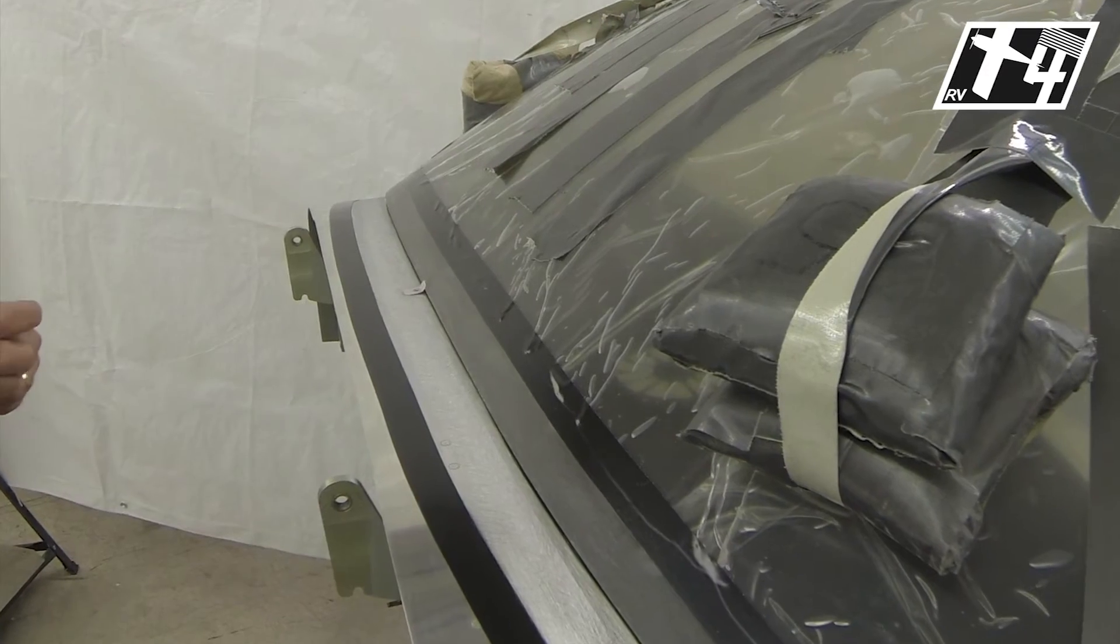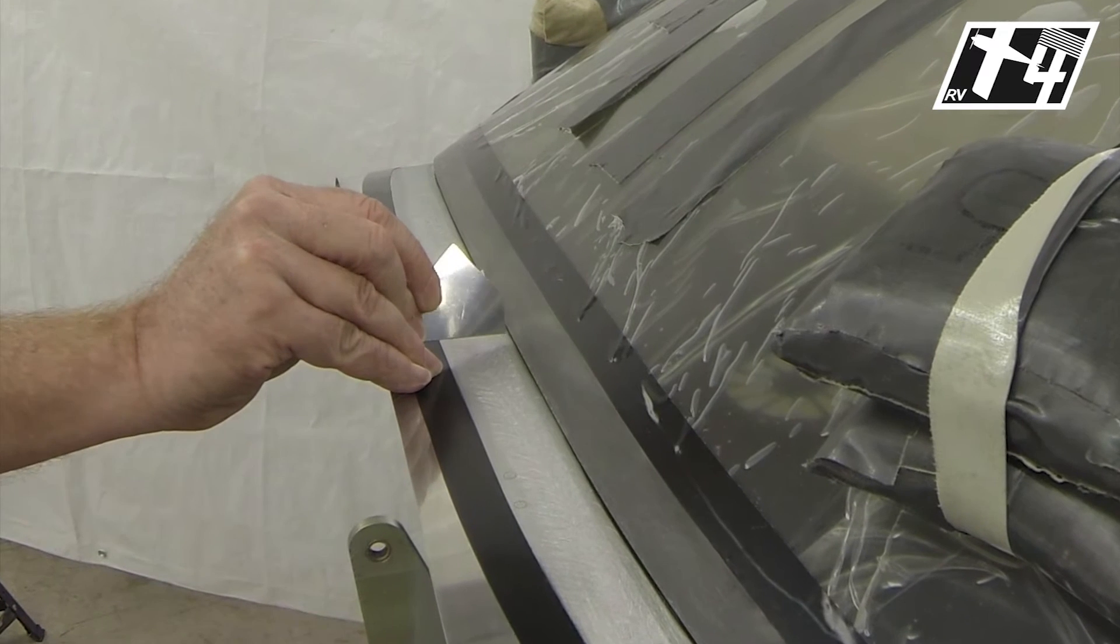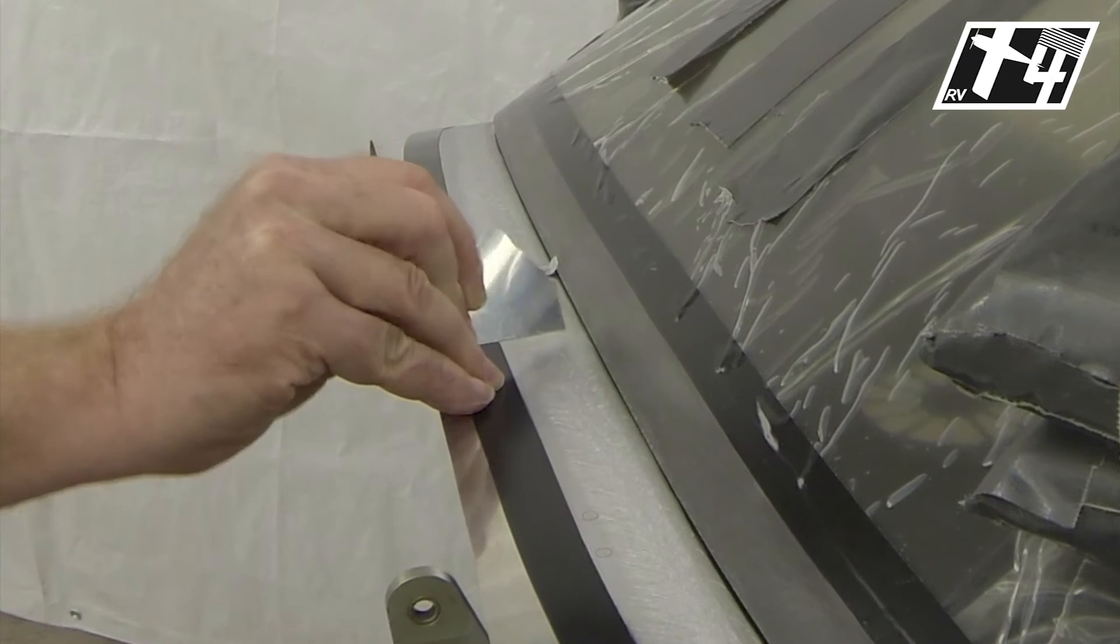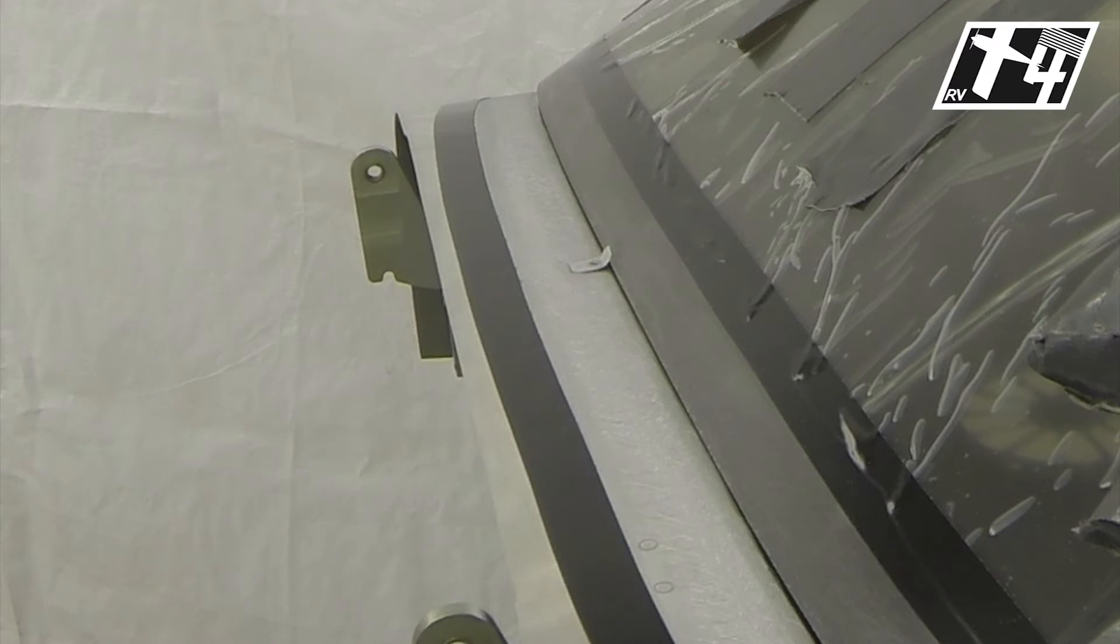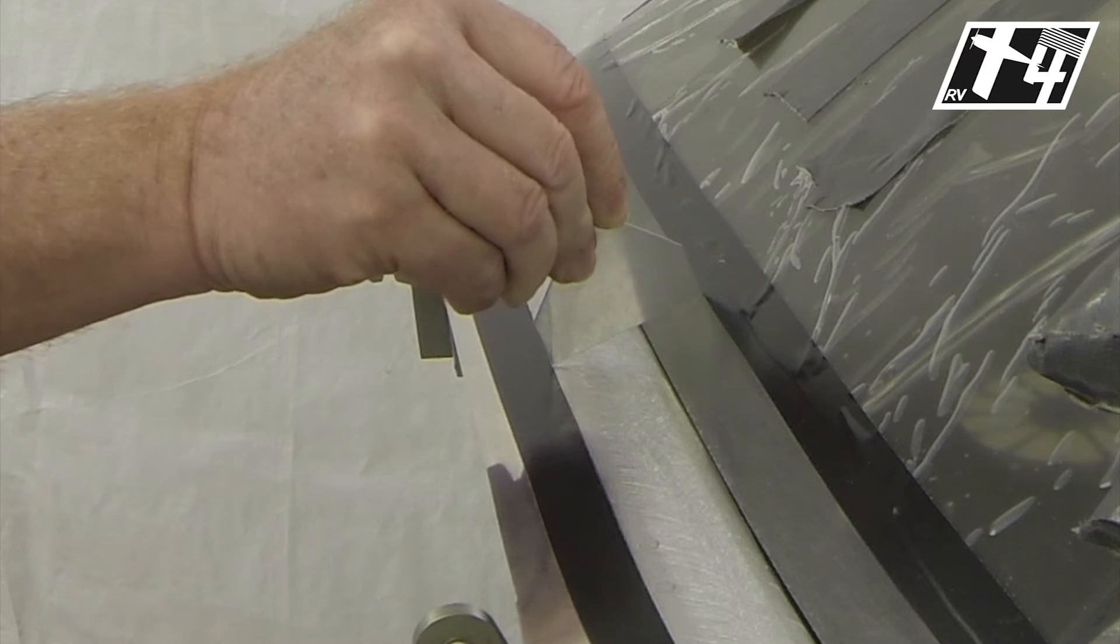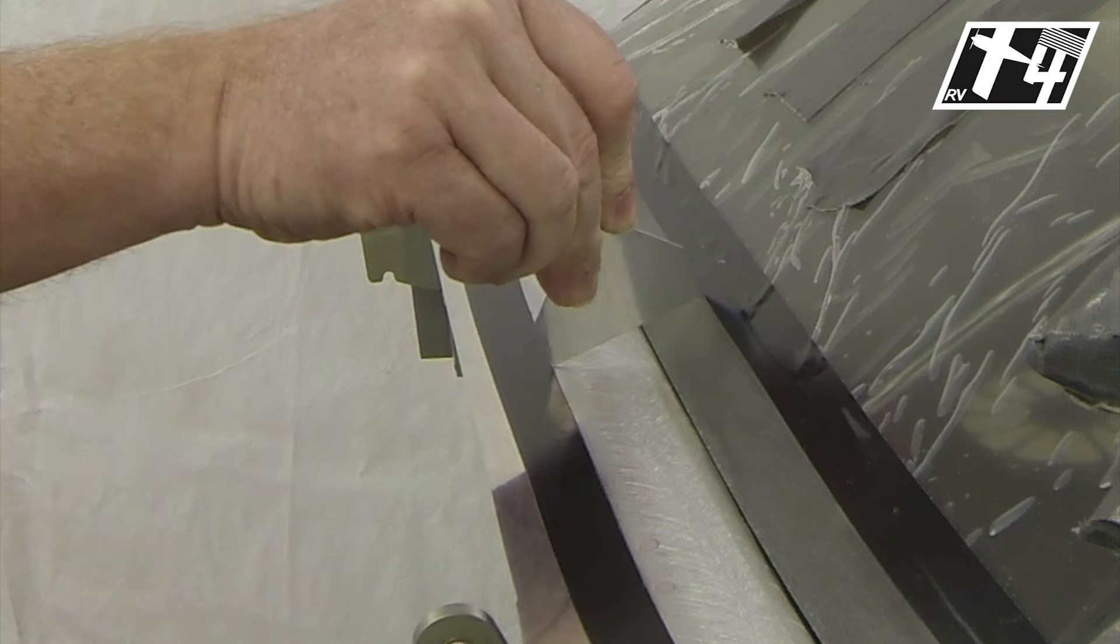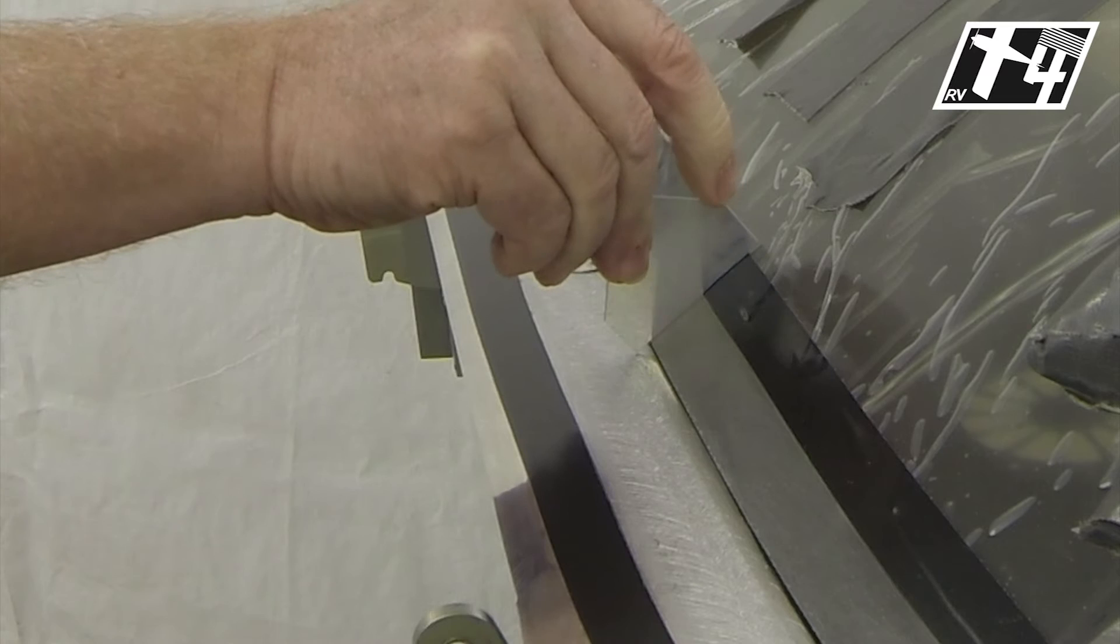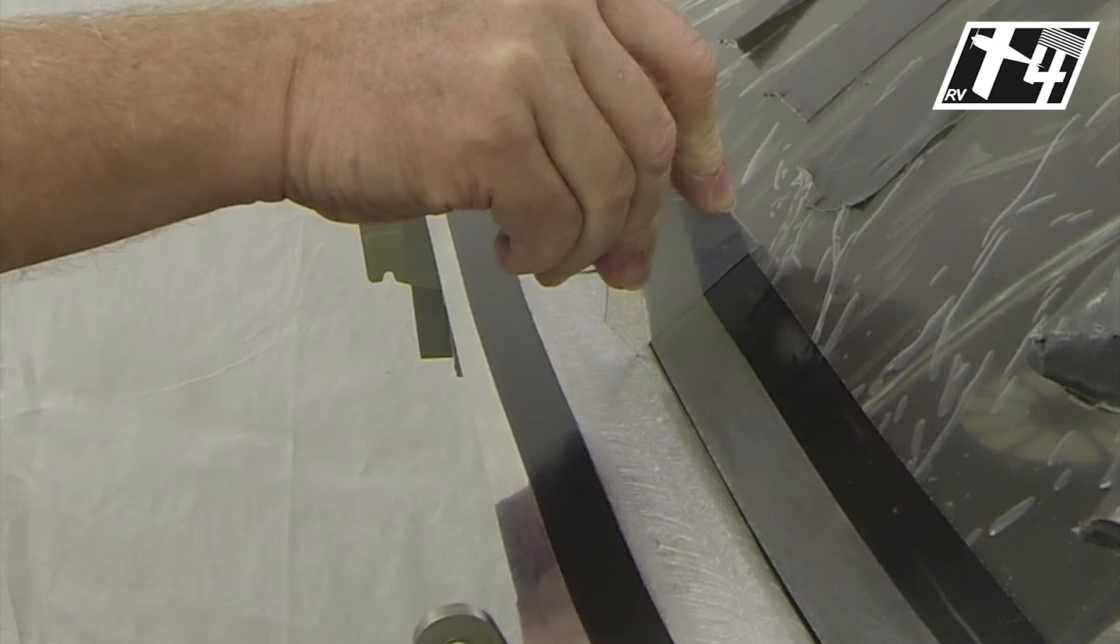The next step in the process is filling this area right here that's produced because of the thickness of the canopy with the lower corner interfacing with the skin. It leaves us a little void area. This is a little tool that's two inches wide that shows the masking for our two-inch wide fiberglass layup, but if I use it as a straight edge, it shows a void that's produced by that edge of the canopy.